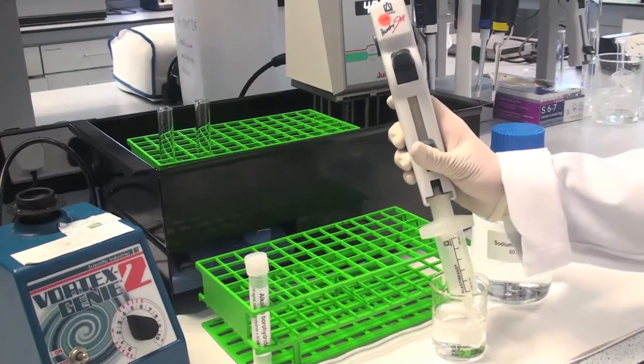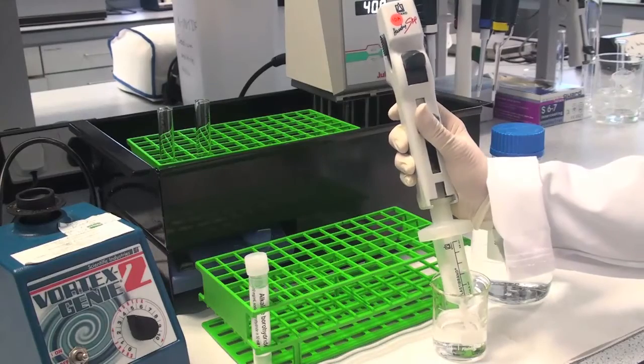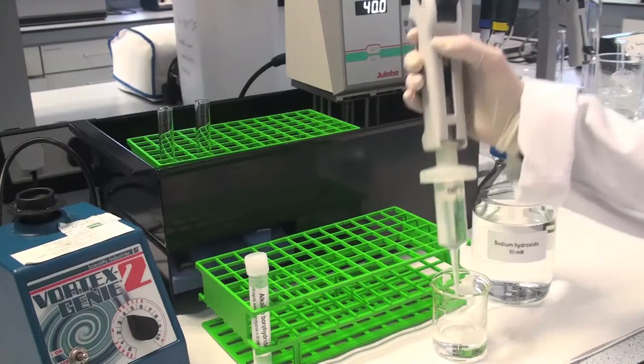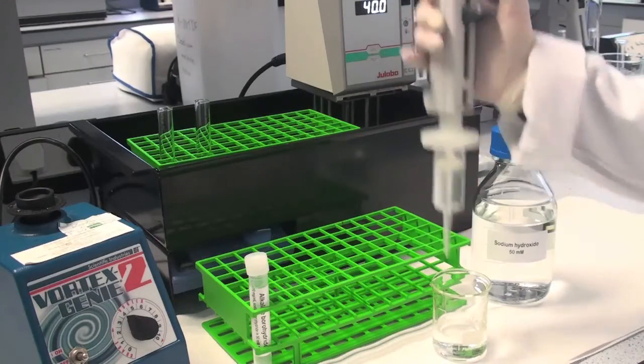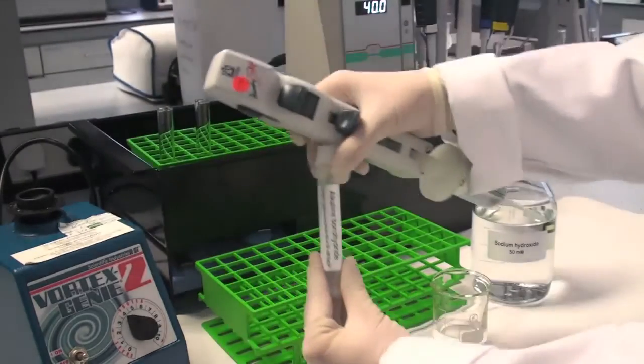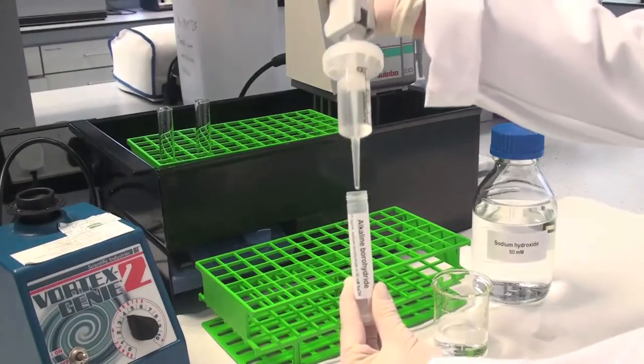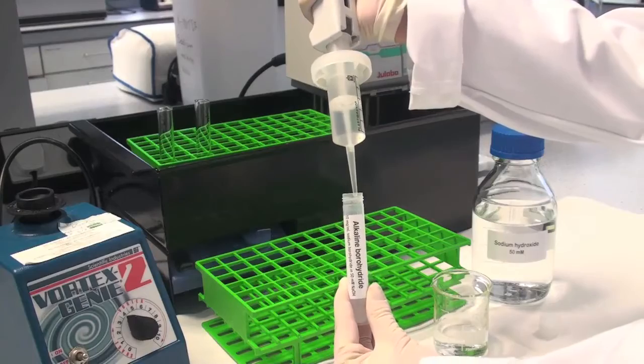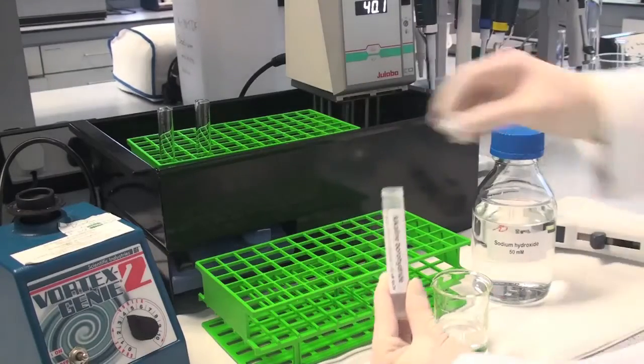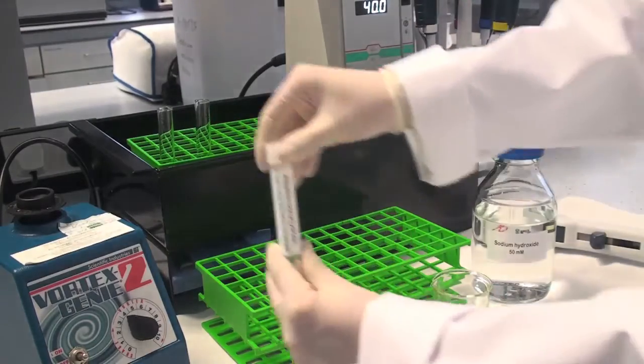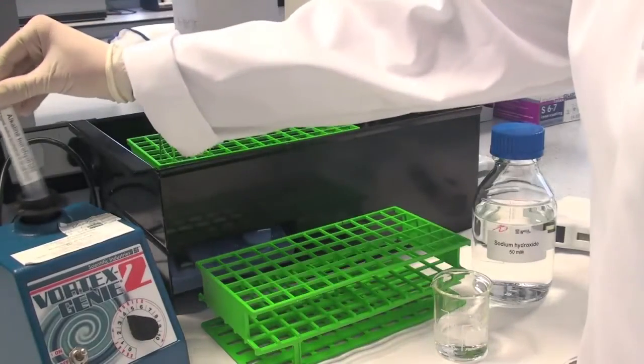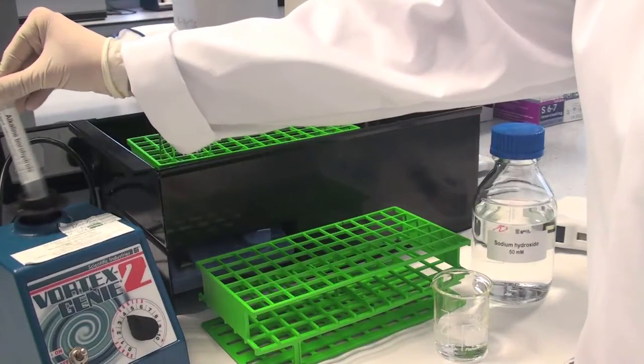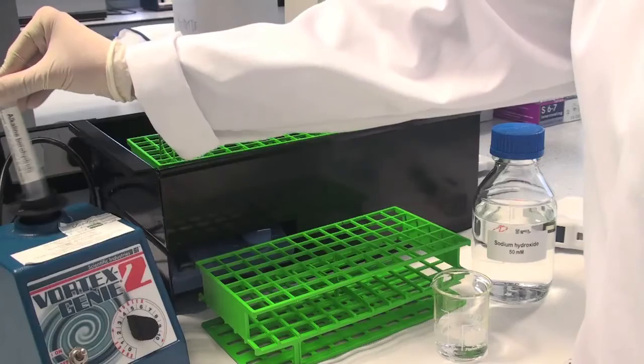Prepare alkaline borohydride solution by adding 5 ml of 50 millimolar sodium hydroxide to 50 mg of pre-weighed sodium borohydride in a polypropylene tube. Mix well. Use this solution soon after preparation.